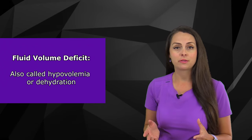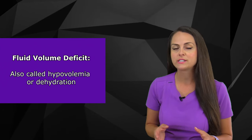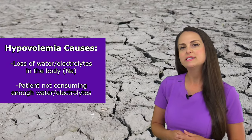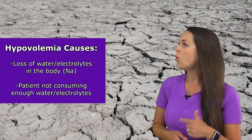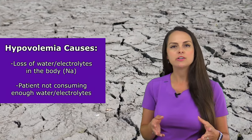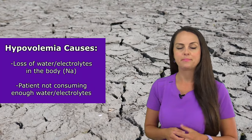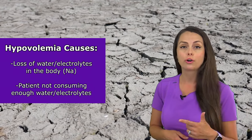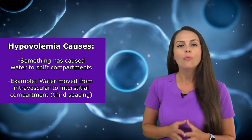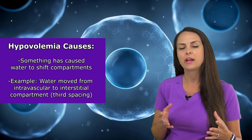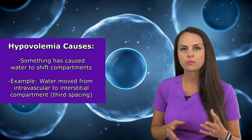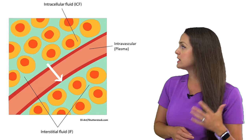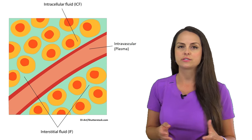You may also hear fluid volume deficit referred to as hypovolemia or dehydration. Dehydration can occur for many different reasons: a loss of water or electrolytes — specifically sodium — the patient isn't consuming enough water or electrolytes, or water has shifted within fluid compartments. For instance, water moving from the intravascular compartment to the interstitial compartment, which is referred to as third spacing.